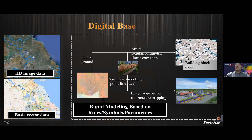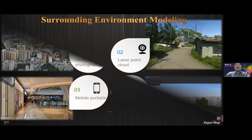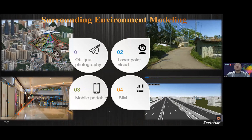First, we need to create a digital base for the pipe network. In a 2D map, it can be composed of basic vector data and high-definition image data. In a 3D scene, we can do rapid modeling based on rules, symbols, and parameters. We can also use many 3D data sources to express the surrounding environment — for example, oblique photogrammetry and point clouds are used to express large-scale buildings on the ground, mobile portable data are used to express the indoor environment, and BIM is used to express fine models.